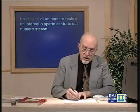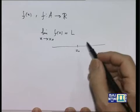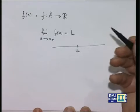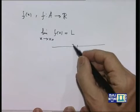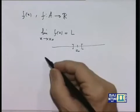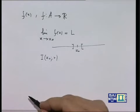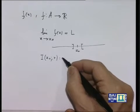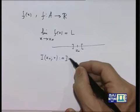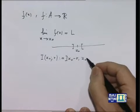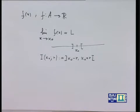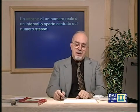L'intorno di centro x₀ e raggio R è l'intervallo aperto (x₀ - R, x₀ + R). È un intervallo aperto centrato nel punto x₀ con raggio R. La parola 'raggio' sarebbe più appropriata in un piano piuttosto che sulla retta, ma per analogia si parla di raggio.